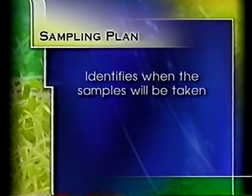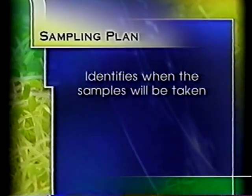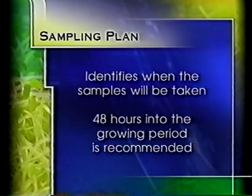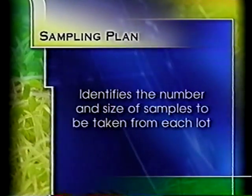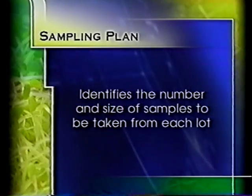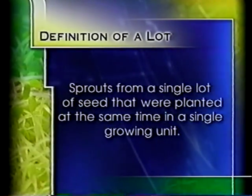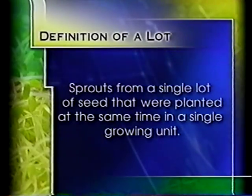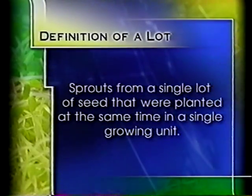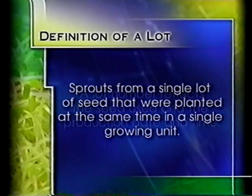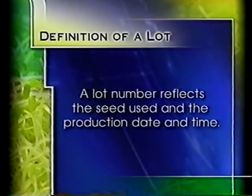A sampling plan should be decided upon before sample collection begins. The sampling plan will identify when the samples will be taken — the current recommendation is that samples are taken about 48 hours into the growing period — and the number and size of samples to be taken from each lot. A lot is defined as sprouts from a single lot of seed planted at the same time in a single growing unit, meaning a single drum or rack of trays. A lot number reflects the seed used and the production date and time.